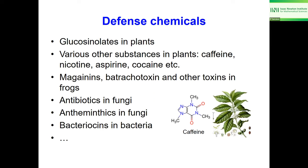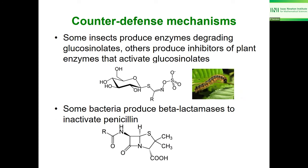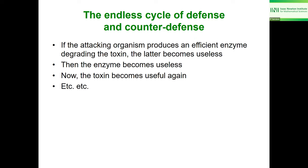This presentation was originally given at an institute dealing with plants and herbivores, but similar concepts apply to microbial communities. The idea is to think about defense chemicals — for example antibiotics, or defense chemicals produced by fungi against bacteria. We also have counter-defense mechanisms; for example, some bacteria produce beta-lactamases which degrade penicillin or other beta-lactam antibiotics. So the antibiotic is the defense, and the enzyme is the counter-defense.